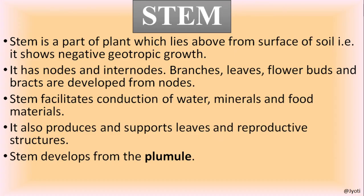Stem is a part of the plant which lies above the surface of soil. There are some exceptions because underground modifications of stem also exist. But the general feature is that stem always grows above the surface of the soil — that means it is negatively geotropic, growing away from the earth's surface, whereas root is positively geotropic and grows towards the soil.